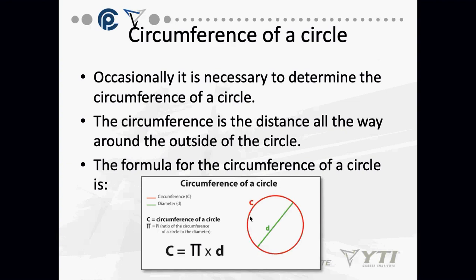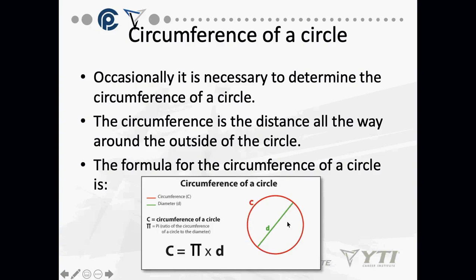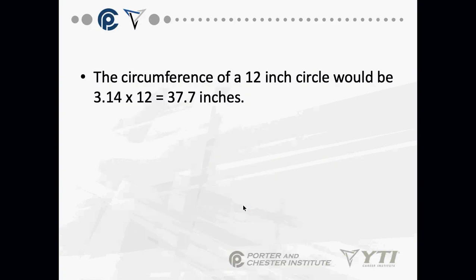The circumference of a 12-inch circle is 3.14 times 12, which equals 37.7 inches. That's what formula sheets are meant for.